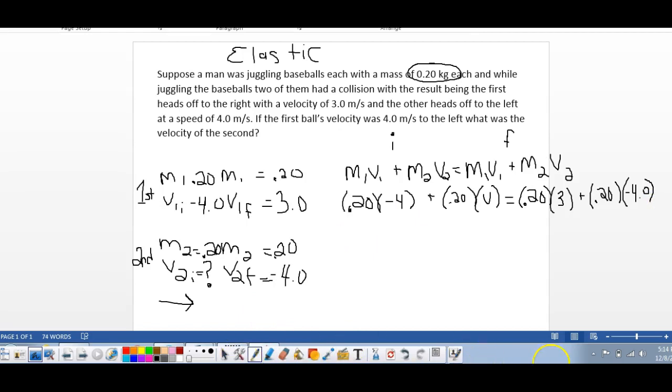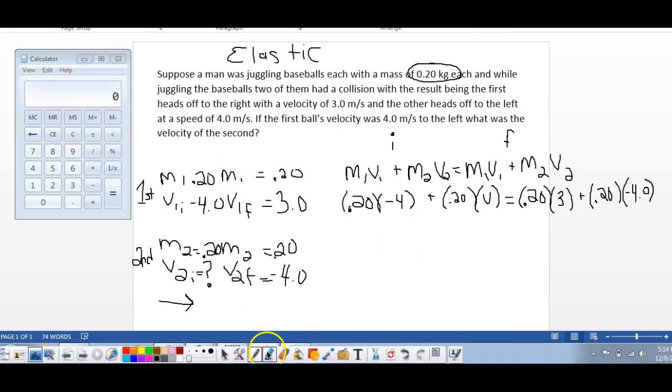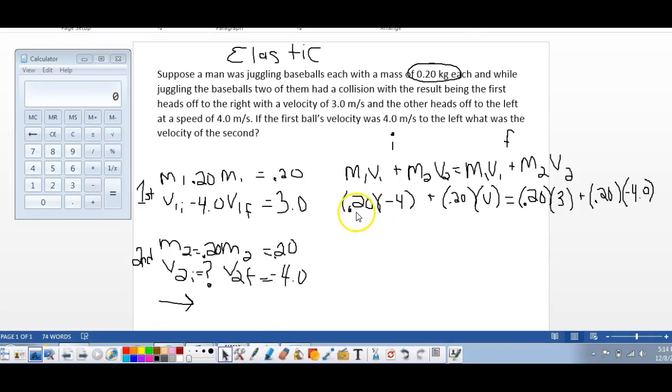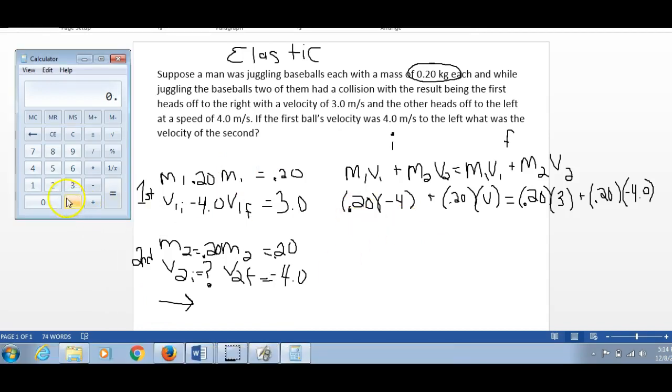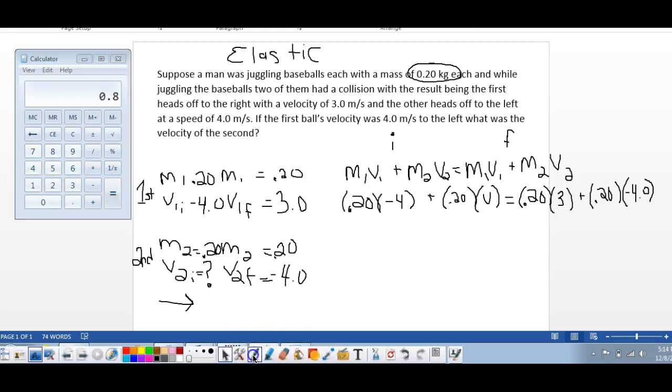So let me get our calculator out. Not too difficult here. So 0.2 times 4, probably almost do this in your head, it's 0.8. This could be a negative, negative 0.8 plus 0.2V.